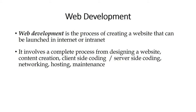Web development involves a complete process from designing a website, content creation, client-side coding, server-side coding, networking, hosting, and maintenance. This process starts from designing what content we need to display to the user, then the coding part — which has two types: client-side and server-side. After that comes networking, hosting, and maintenance, which continues as long as we hold the website. A website is a collection of web pages.